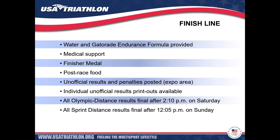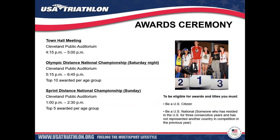All athletes will receive a finisher medal. Post-race, unofficial results and penalties will be posted in the expo area, with individual printouts available. Olympic distance results are final after 12:10 p.m. on Saturday; sprint distance results are final after 12:05 p.m. on Sunday. The Town Hall meeting is Saturday 4:15 to 5 p.m., Olympic distance awards from 5:15 to 6:45 p.m. with top 10 awarded per age group. Sprint distance awards are at Cleveland Public Auditorium on Sunday from 1 to 2:30 p.m. with top 5 per age group. To be eligible, you must be a U.S. citizen or a U.S. national — someone who has resided in the U.S. for three consecutive years and has not represented another country in competition the previous year.